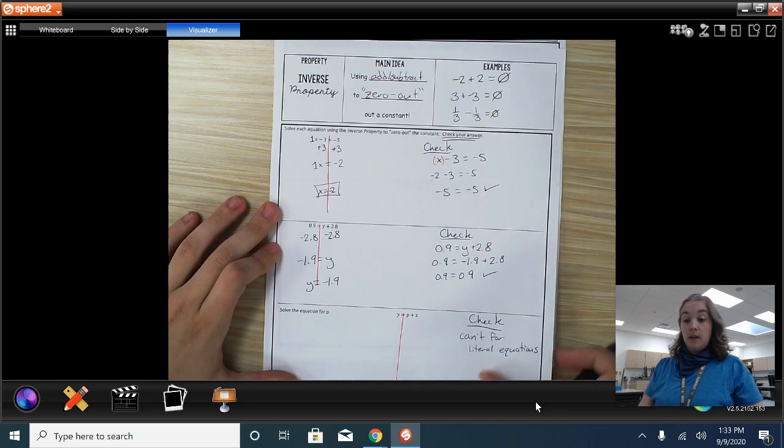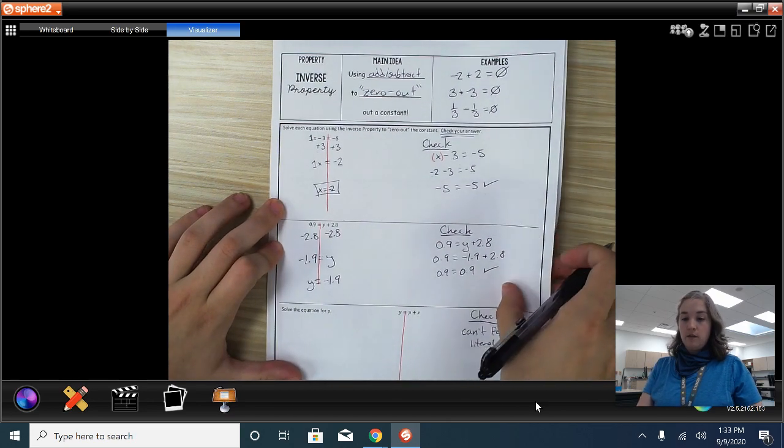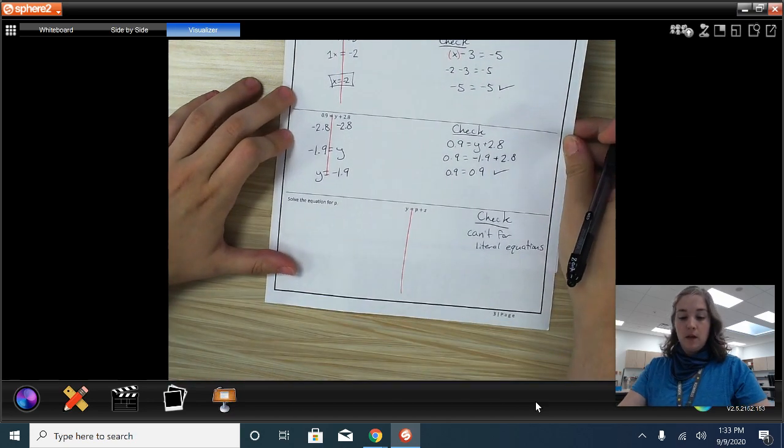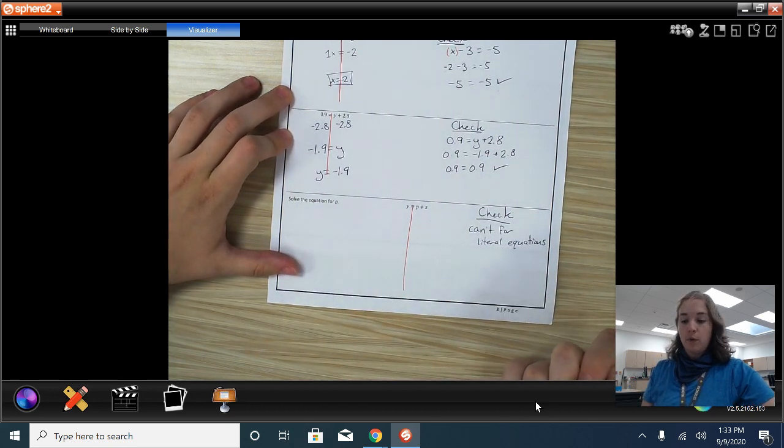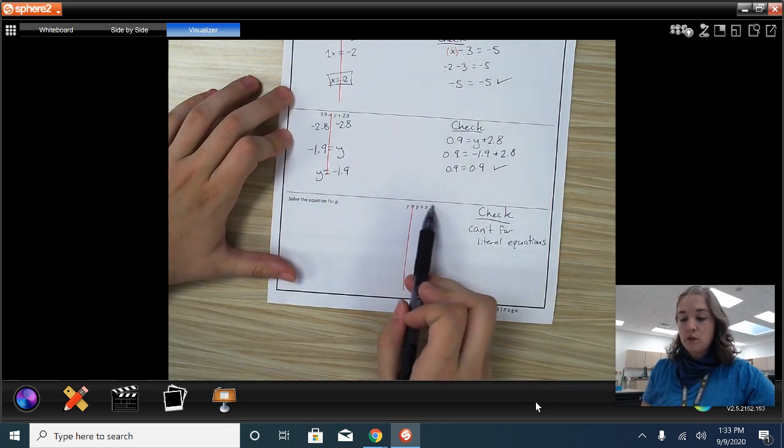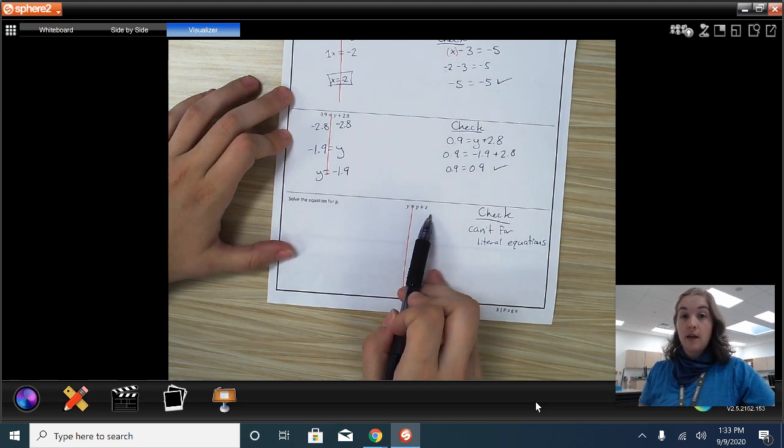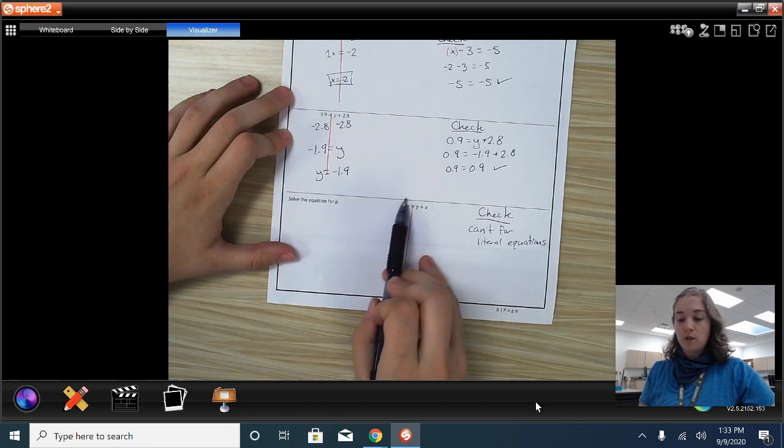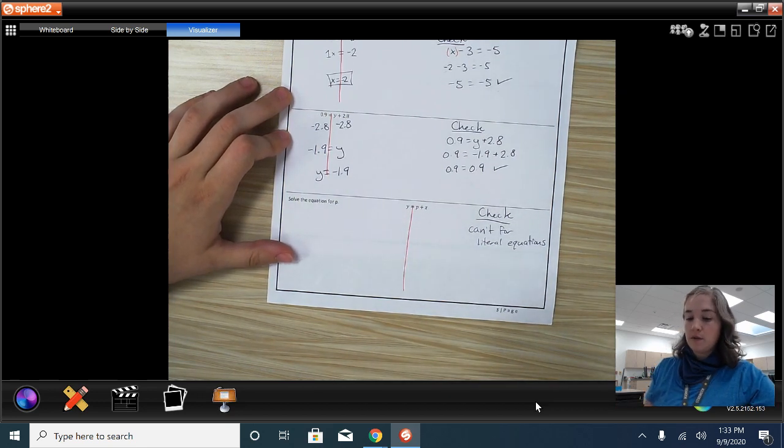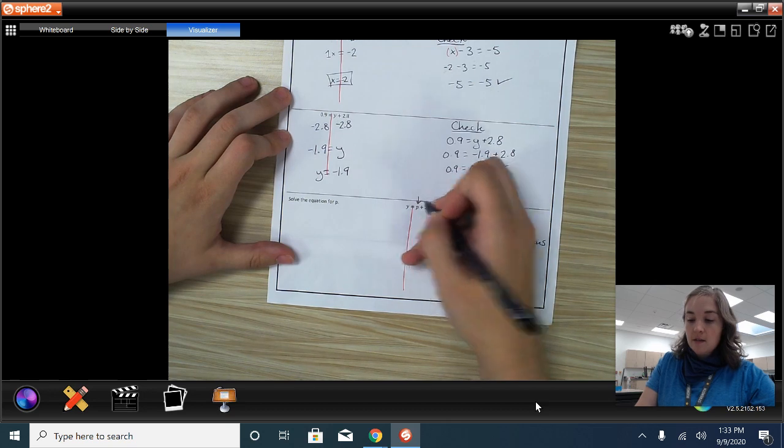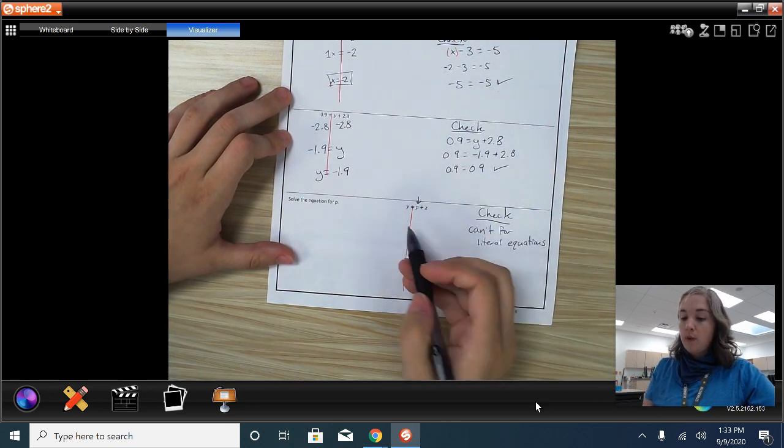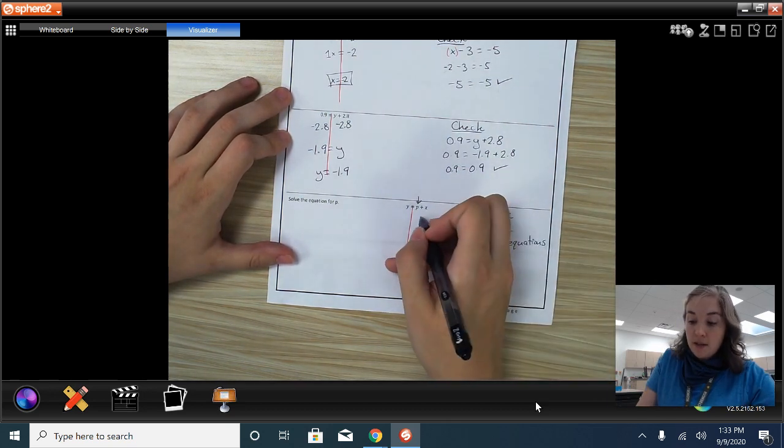The last one that we're going to look at for these example problems is to solve the equation P as a literal equation. Literal equations have no constants. They have only variables. So this is a literal equation. Sorry, I get a little tongue-tied with those sometimes. So we want P to be by itself. Well, we have a plus Z here. The opposite of adding is subtracting. So I minus Z.